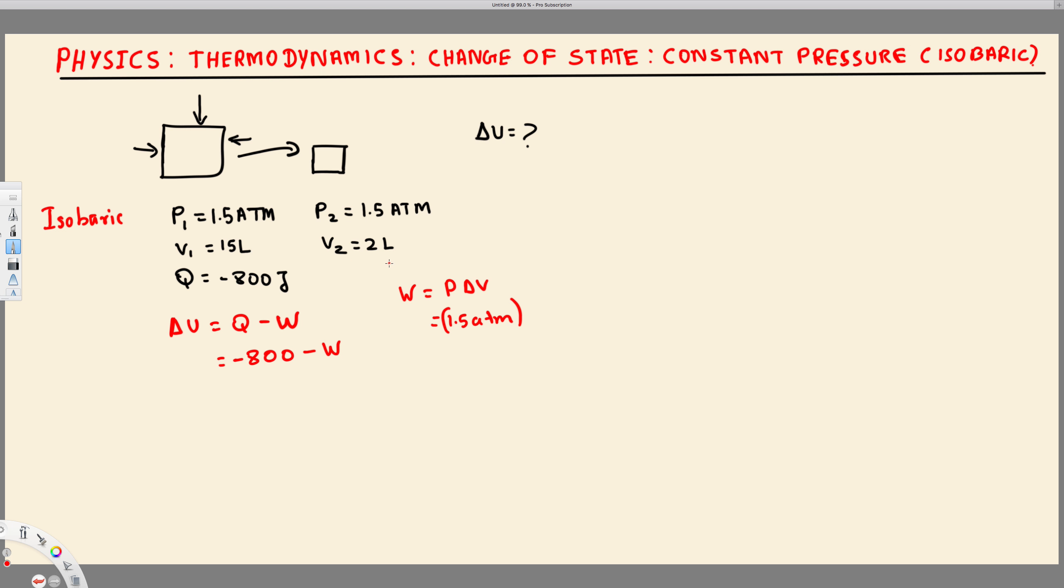That's going to give us negative 13. So let's write this one: 2 liter minus 15 liter, that's going to give us negative 13. So this is going to be 1.5 atm times 13 liter.